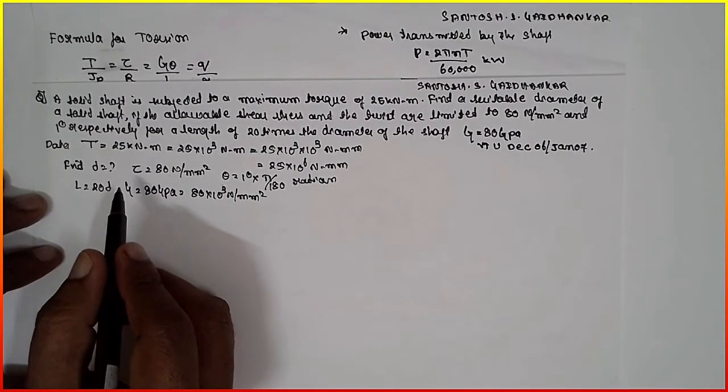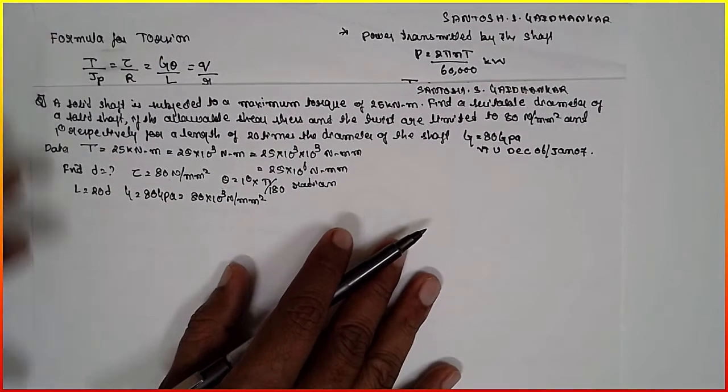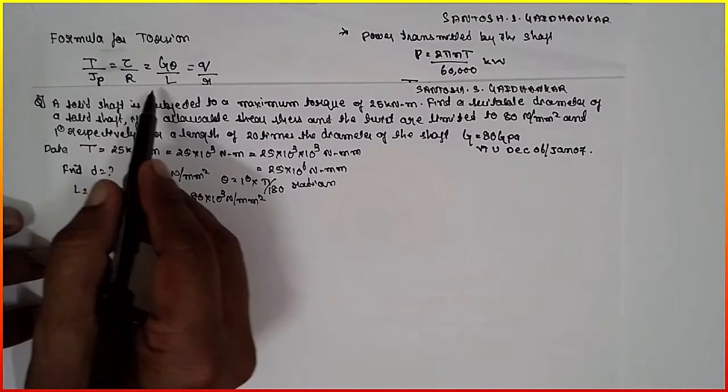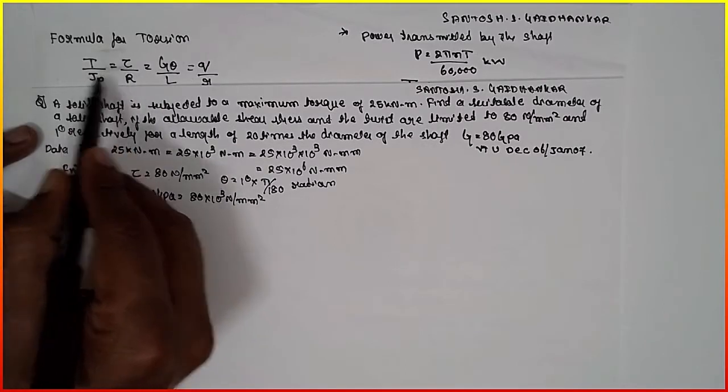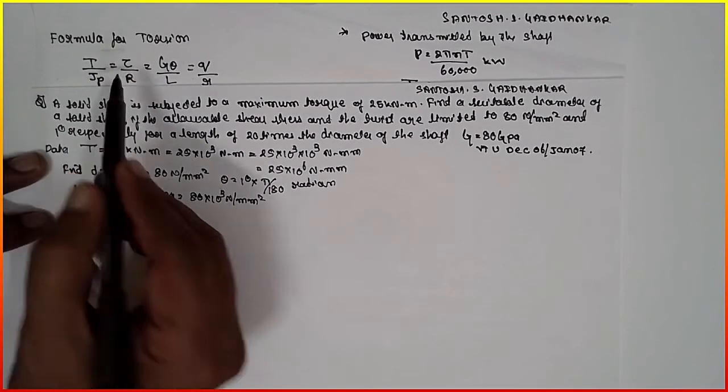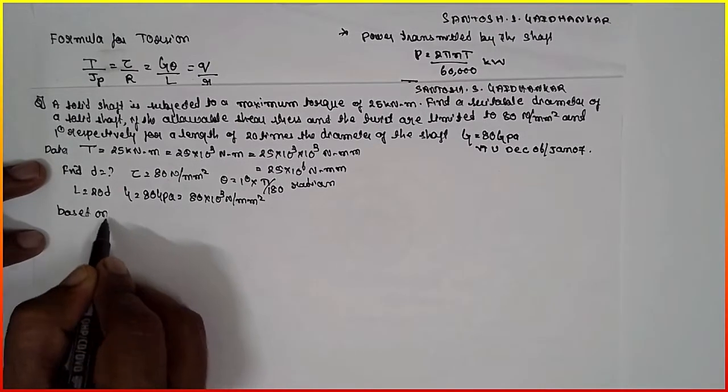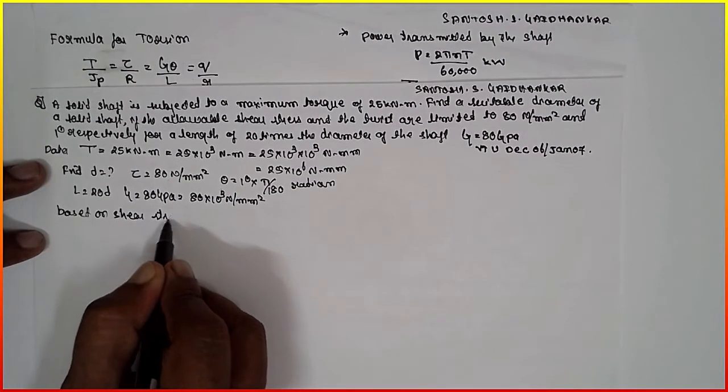We have to find out the diameter. Now this is the formula we have to use: T divided by Jp equals tau divided by R equals G theta by L. First I am going for the terms based upon shear stress.